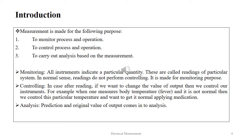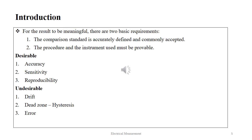For instance, if we measure body temperature and find that somebody has fever, we apply medication to bring back the body temperature to normal. Prediction and original value of outcome come into play to analyze the output. For any result to be meaningful, there are two basic requirements: the standard should be accurately defined and commonly accepted, and the procedure must be provable. The desired parameters of any instrument are accuracy, sensitivity and reproducibility, while the undesired parameters are drift, dead zone and error.